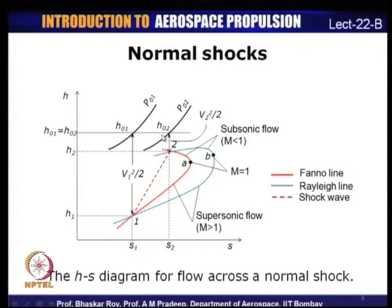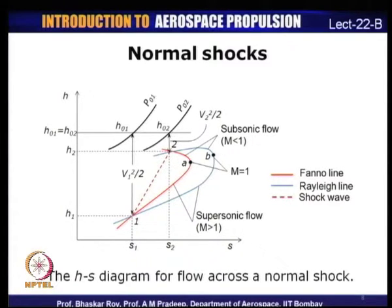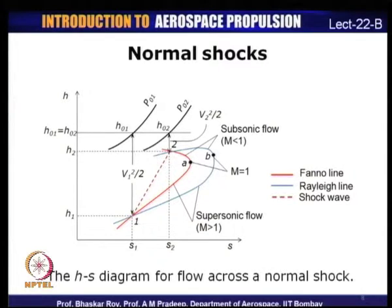Since stagnation enthalpies are the same but static enthalpies are different and there is a loss of pressure, stagnation pressure across the shock: P₀₂ < P₀₁. This is why the two constant pressure lines P₀₁ and P₀₂ are shown as separate lines. On the Fanno and Rayleigh lines, the points where the curve changes direction correspond to sonic flow (Mach = 1) at points A and B respectively. Below these lines we have supersonic flow, and above the lines we have subsonic flow.